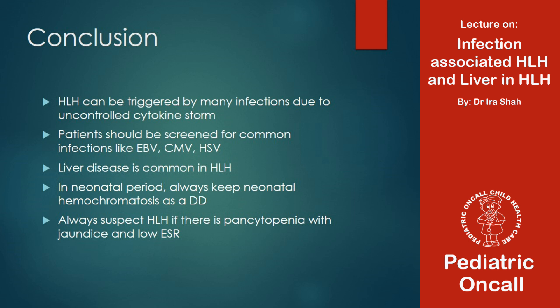In the neonatal period, always keep neonatal hemochromatosis in mind as a differential diagnosis. For students: when would you suspect HLH and get the hematologist involved? When we have pancytopenia - our differentials are aplastic anemia and malignancy, but we rarely think of HLH. So anybody who has pancytopenia and jaundice - rule out HLH. If there is pancytopenia with jaundice and a low ESR, then always think of HLH.